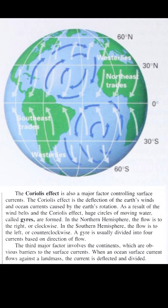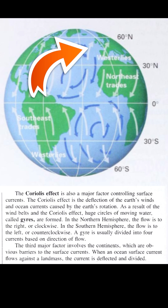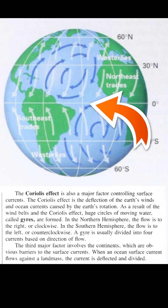As a result of the wind belts and the Coriolis effect, huge circles of moving water called gyres are formed. In the northern hemisphere, the flow is to the right, or clockwise. In the southern hemisphere, the flow is to the left, or counterclockwise.